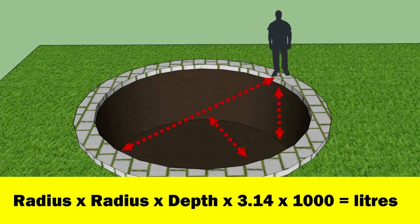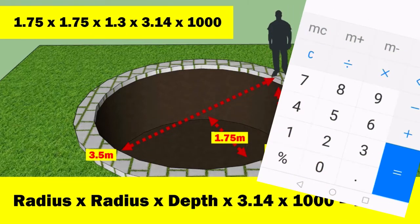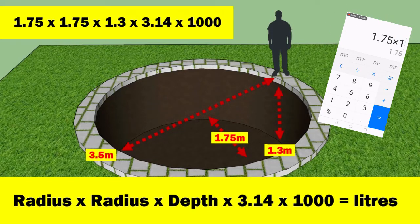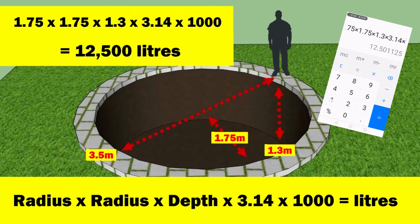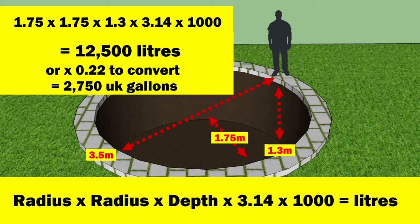Notice that we use the radius twice and 3.14, which is a rough approximation of pi. So let's say your pond has a diameter of 3.5 meters and a depth of 1.3 meters. We divide the diameter by 2 to obtain the radius, which is 1.75 meters. Then we multiply everything out: 1.75 by 1.75 by 1.3 by 3.14 by 1000 gives us 12,500 liters. If we want to express this in gallons, we multiply the result by 0.22 to obtain 2,750 gallons.